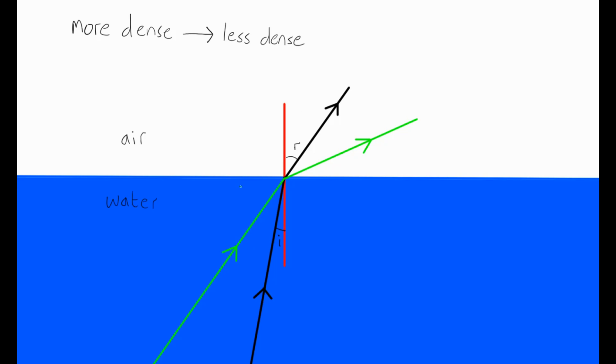The ray of light drawn in green has got a larger angle of incidence. And as to be expected, it also has a larger angle of refraction. So continuing this, what would happen if we increase the angle of incidence even further?